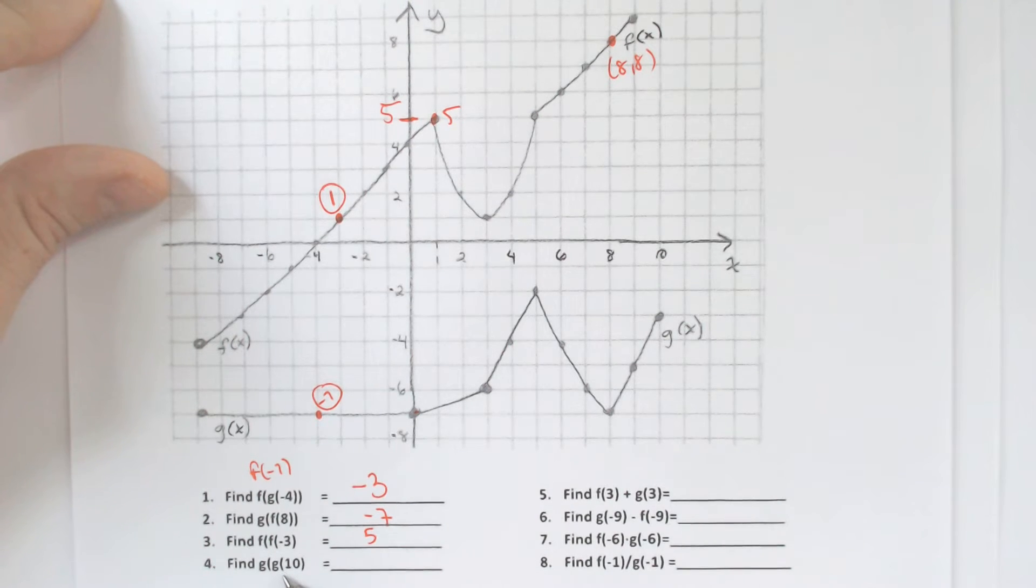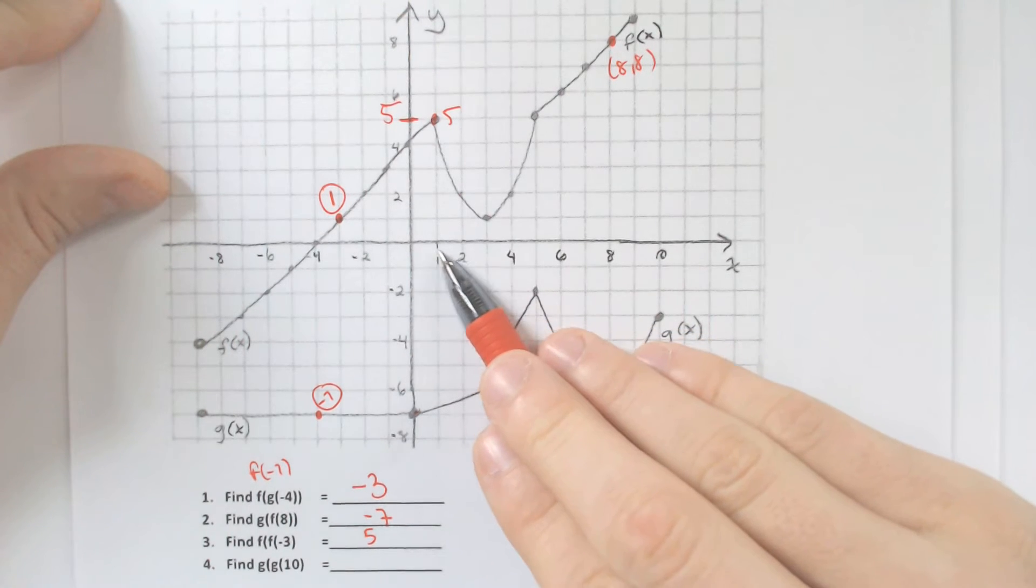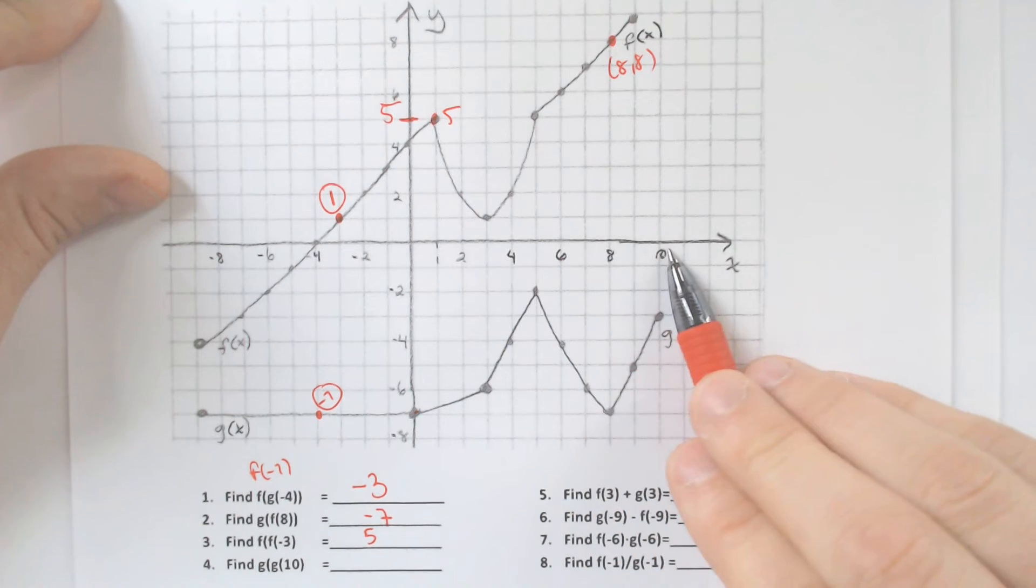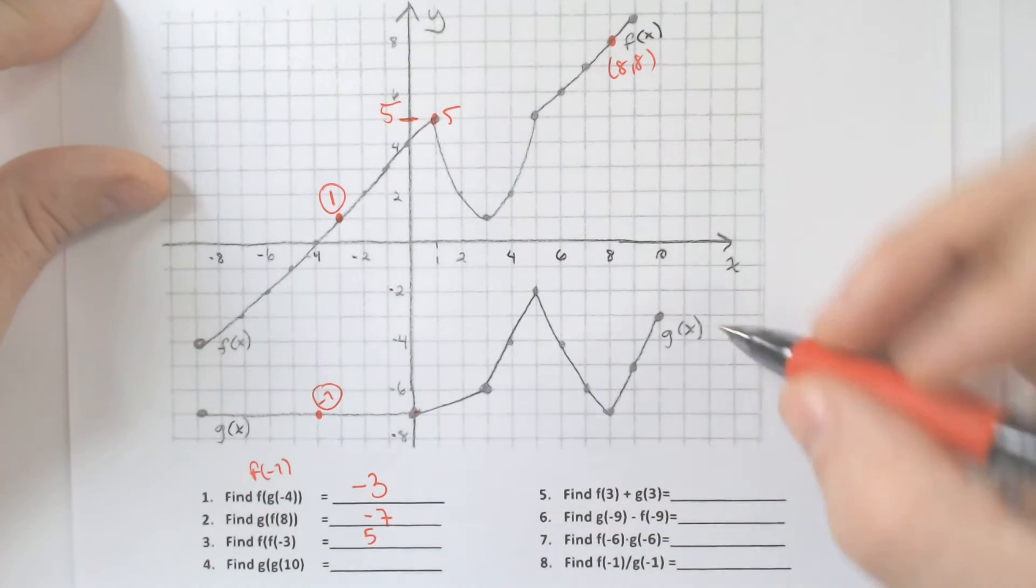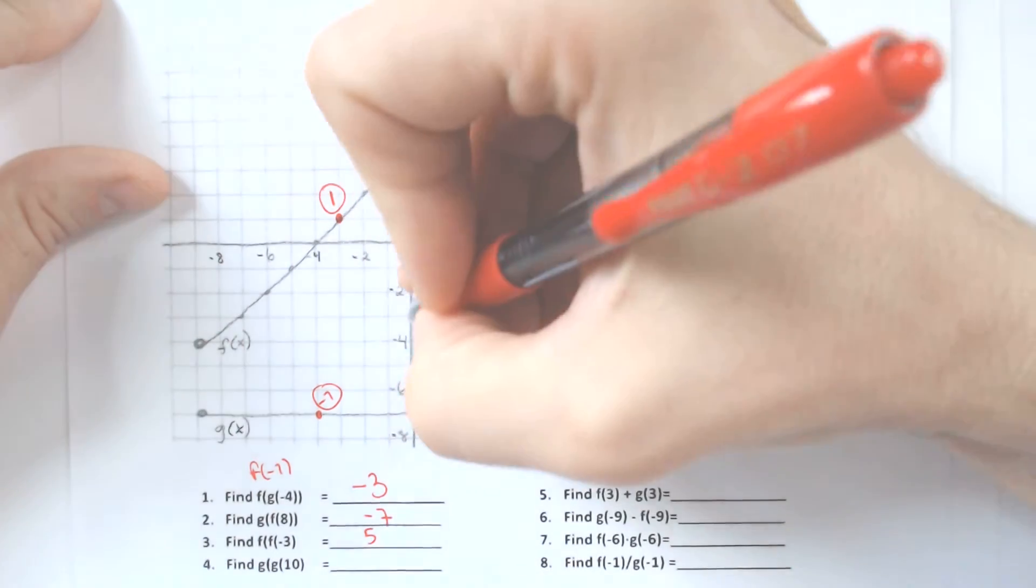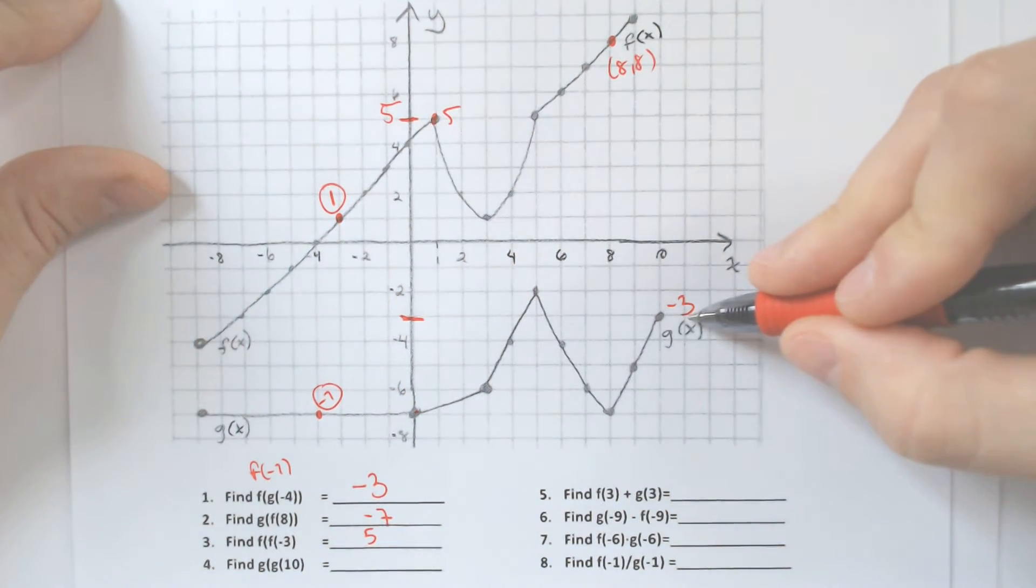g of g of 10, we'd have to go all the way over 1, 2, 4, 6, 8, 10, and now we are at negative 3, I believe, right here.